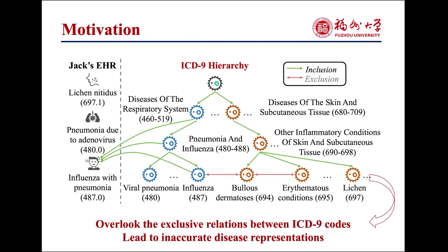However, these approaches primarily focus on inclusive, also known as hierarchical, relations, and tend to overlook the equally important exclusive relations between ICD-9 codes, which offer distinct and complementary insights into the ICD-9 structure. This neglect can lead to inaccurate representation of disease and ICD-9 code relations.